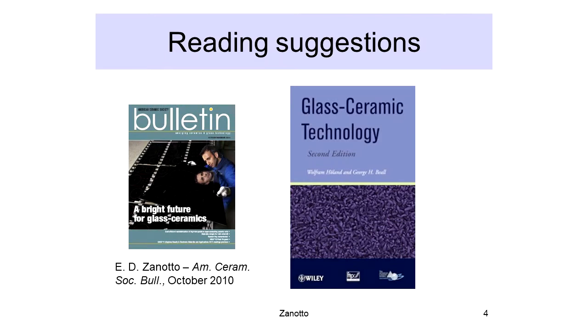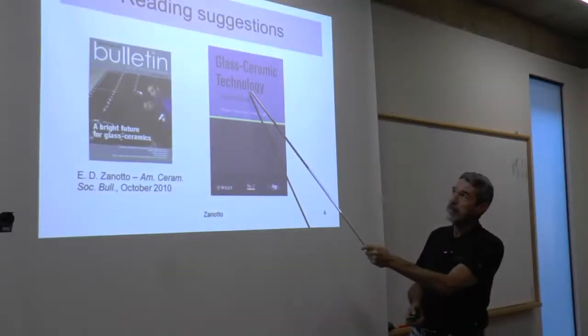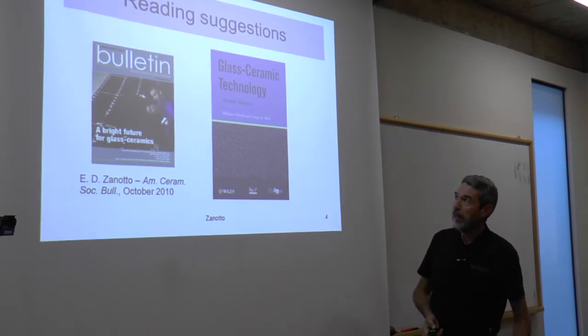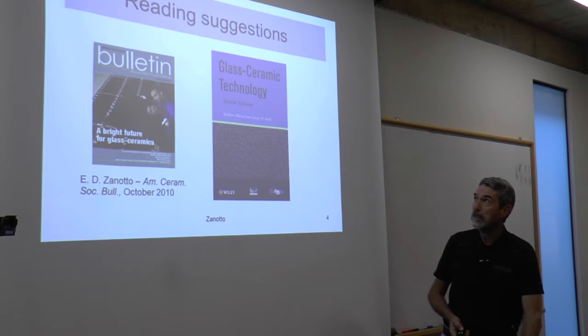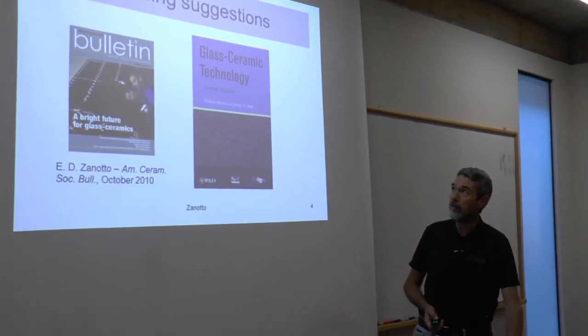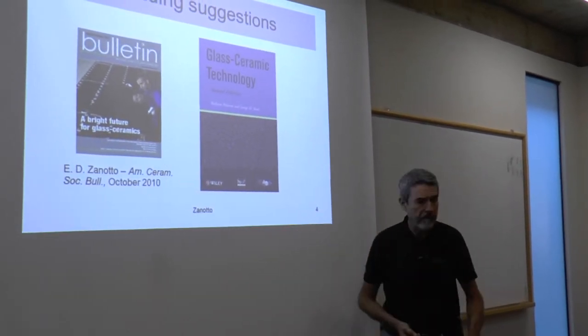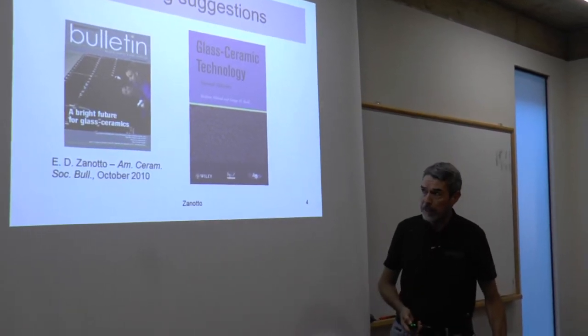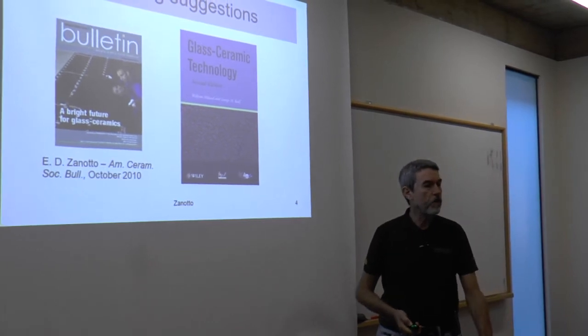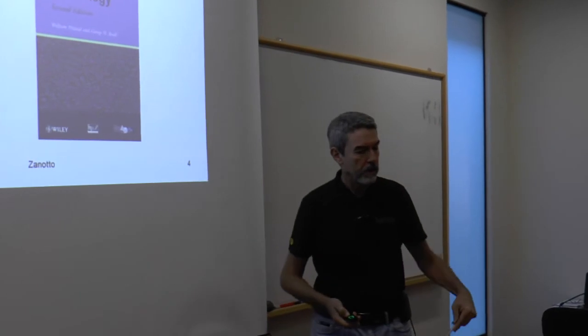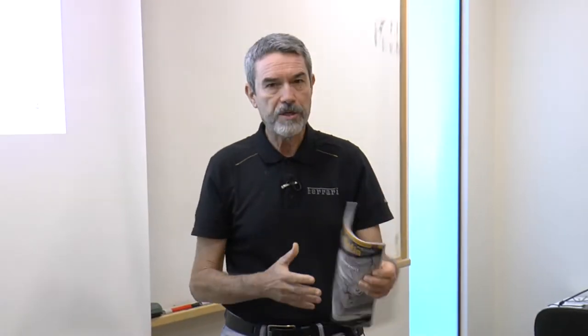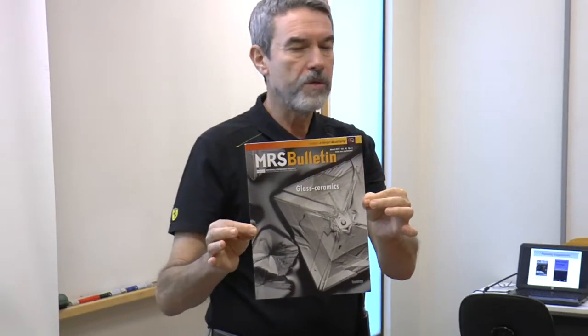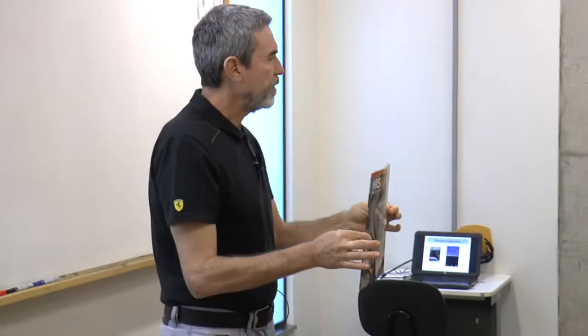Before I continue, I'd like to suggest that you read this book by Wolfram Helland and George Pugh — one of the most complete books on glass ceramic technology, the second edition. Also, a review paper I wrote a few years ago in the Ceramic Bulletin about glass ceramics, and there are two other papers I'll suggest. There's a brand new special issue on glass ceramics published by the Materials Research Society Bulletin, with about six or seven papers from 2017 on glass ceramics.